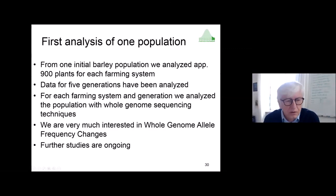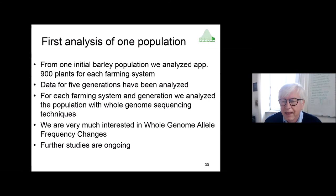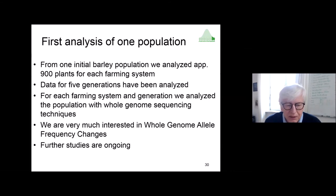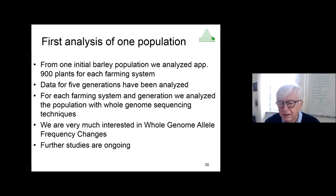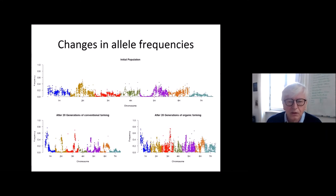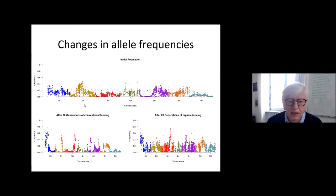From the initial barley population, we analyzed approximately 900 plants per farming system for five of the 20 generations, using whole genome sequencing to track allele frequency changes. We have not yet published these results, but I wanted to present the first findings here. The data look like a Manhattan plot, but it is not — it shows the allele frequency of wild-type alleles across the seven chromosomes of barley.